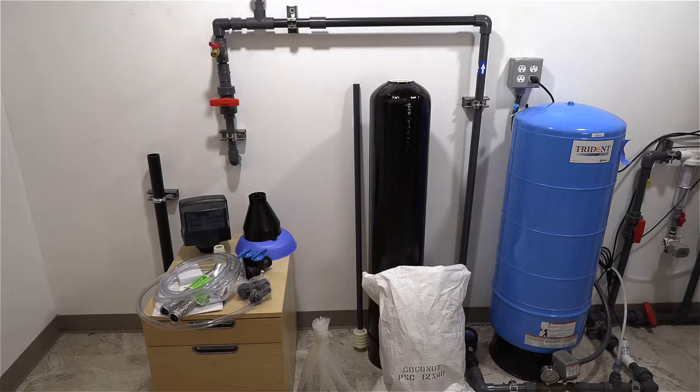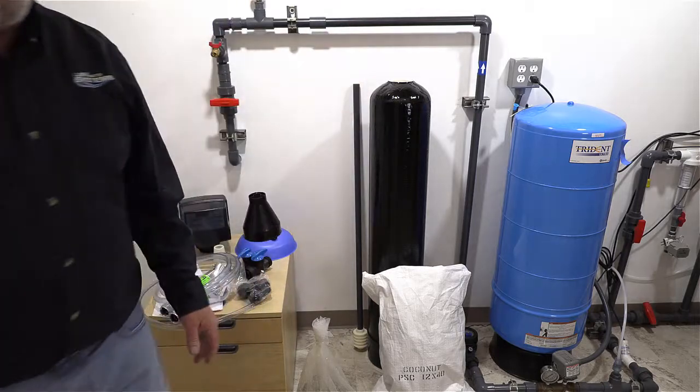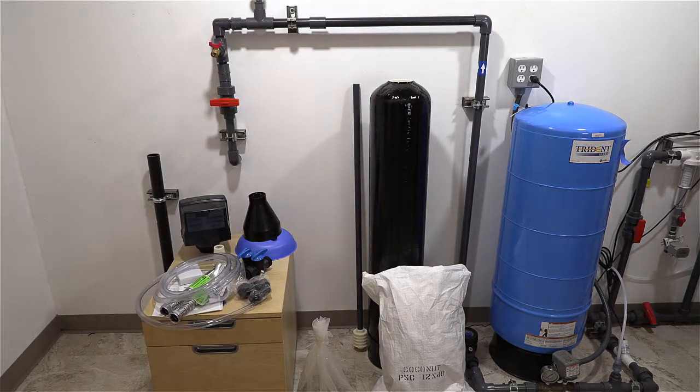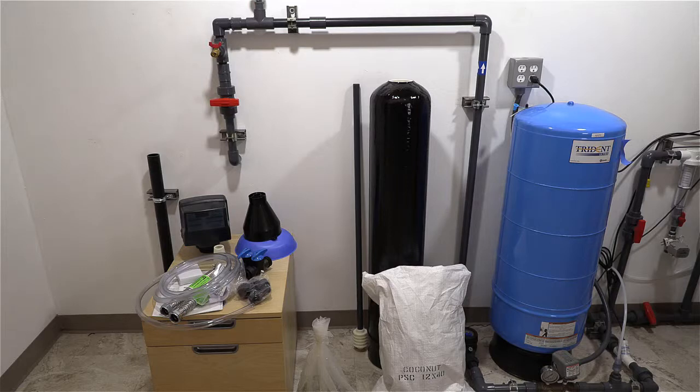For this demonstration we're going to install our system here. It's Schedule 80 PVC. Just a few things to keep in mind when you're going to install your system. You must be at least 10 feet from the entrance of your hot water heater, or you need to install a check valve there so the hot water has no way of getting back to it.